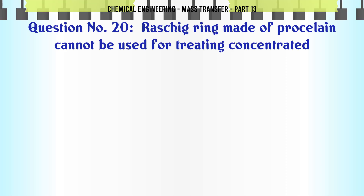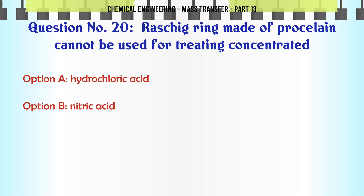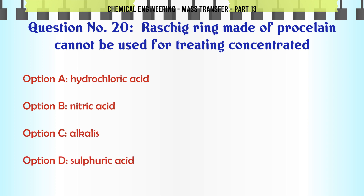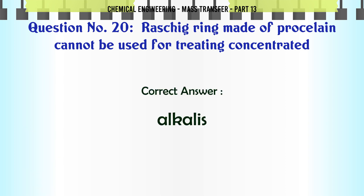Raschig rings made of porcelain cannot be used for treating concentrated: A. Hydrochloric acid. B. Nitric acid. C. Alkalies. D. Sulfuric acid. The correct answer is: Alkalies.